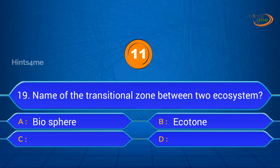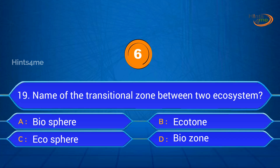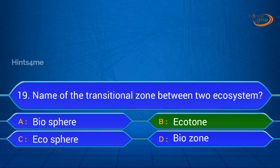Question 19: Name of the transitional zone between two ecosystems? A. Biosphere, B. Ecotone, C. Echosphere, D. Biosonde. Answer: Ecotone.